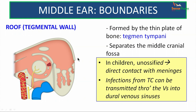The roof is otherwise referred to as the tegmental wall because it is formed of a thin plate of bone — the tegmen tympani — which separates the middle ear cavity from the middle cranial fossa. In children, the tegmen tympani is often unossified, so the middle ear is almost in direct contact with the middle cranial fossa with only mucosa and connective tissue intervening. In adults, there is sometimes drainage of the middle ear into the dural venous sinuses, so infection from the middle ear can pass directly into the dural venous sinuses through transmitting veins.